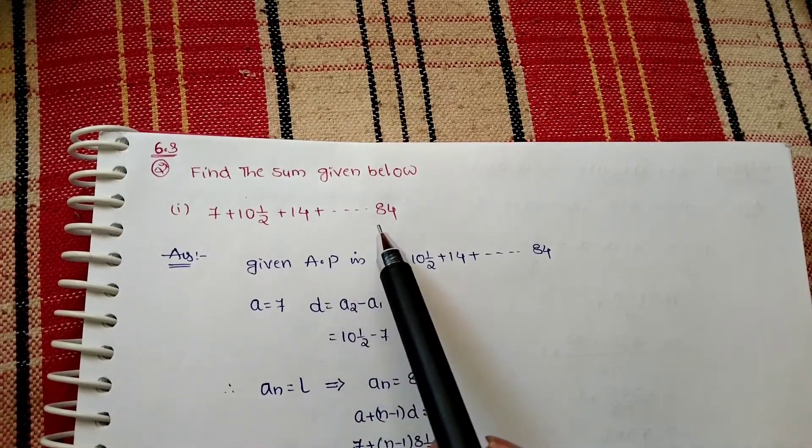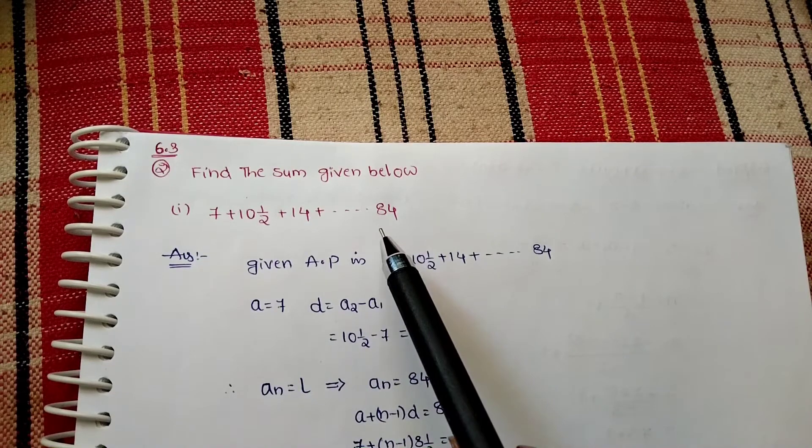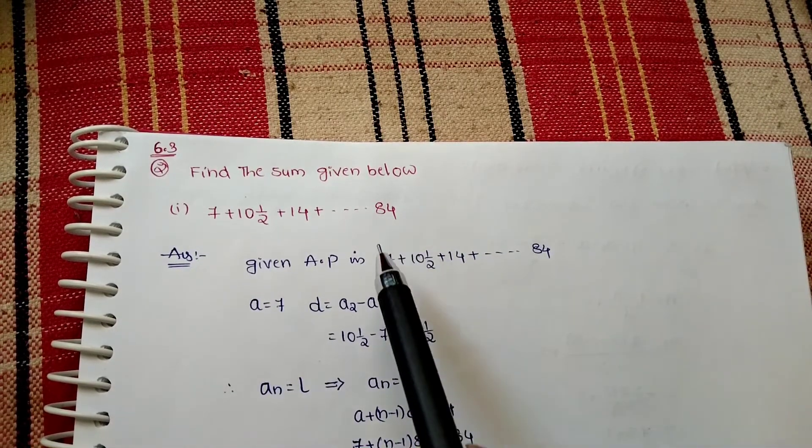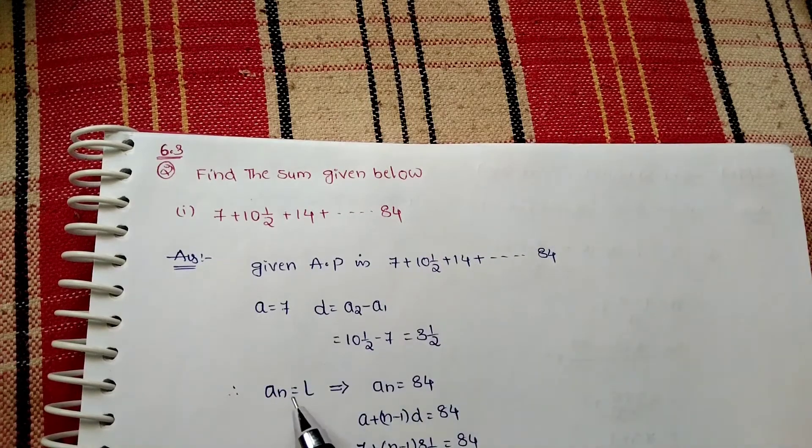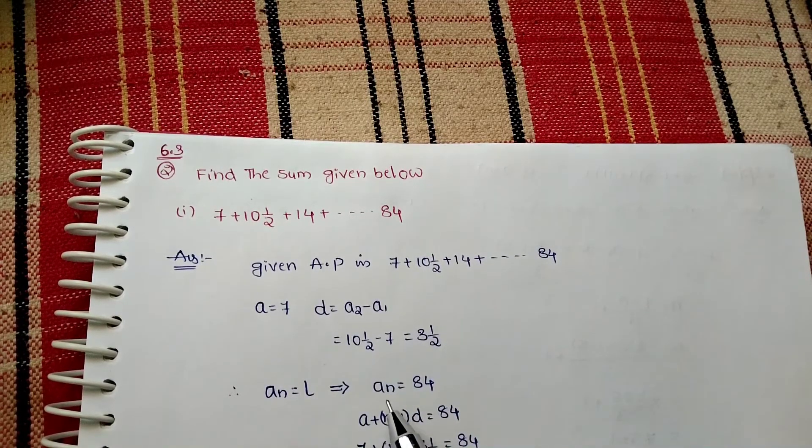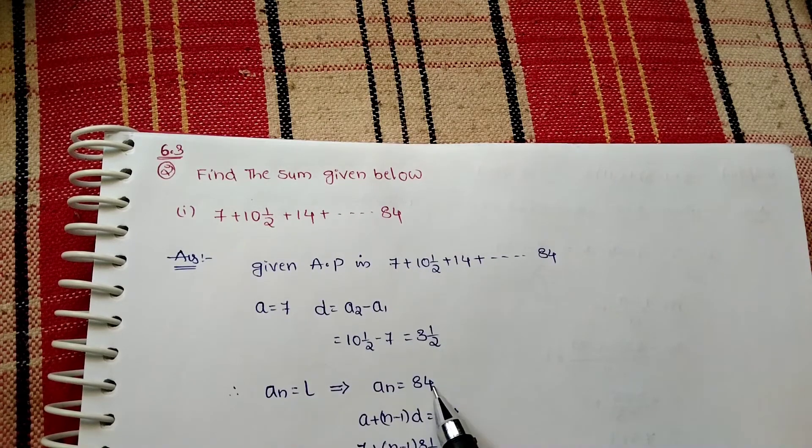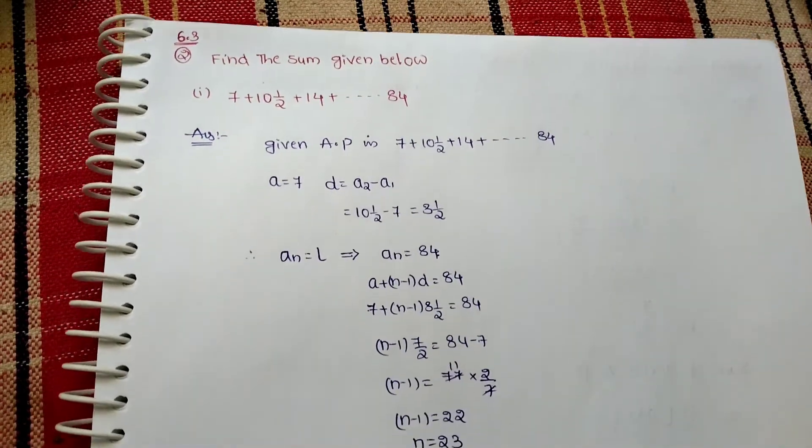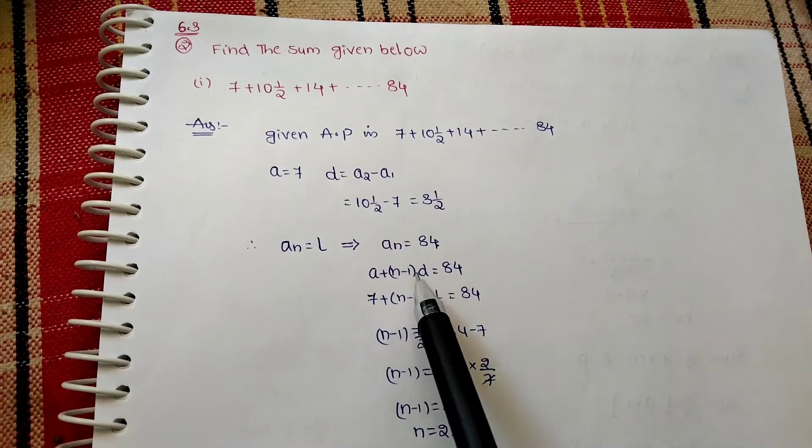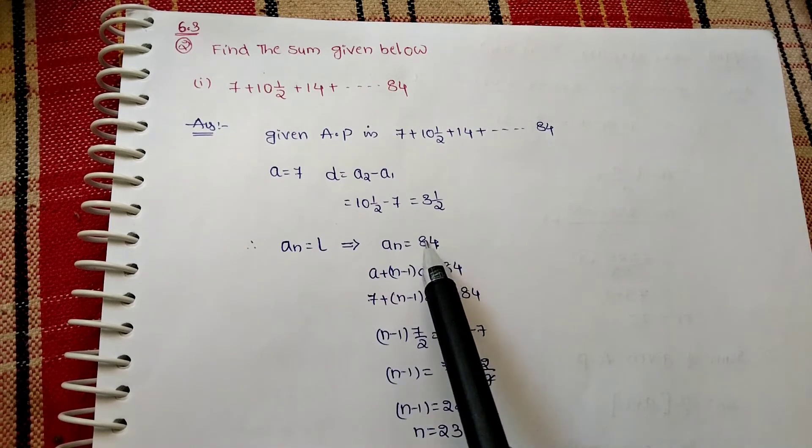How many terms are there in this AP? How do we get that? For that, I am taking 84 as the last term. an equals l. So an equals 84. From that, an means a plus n minus 1 into d, that equals 84.